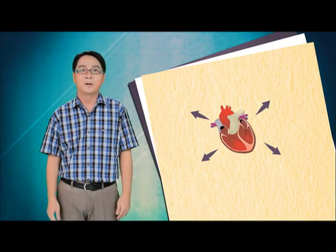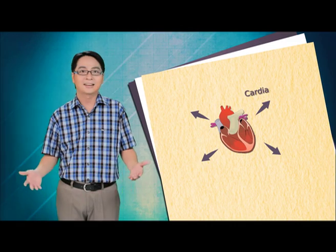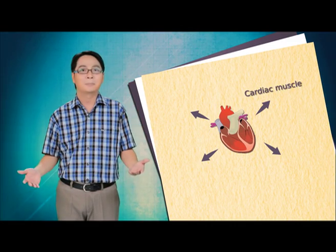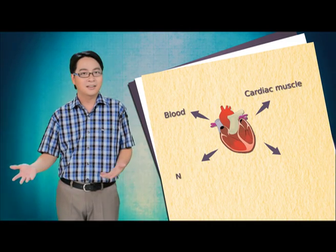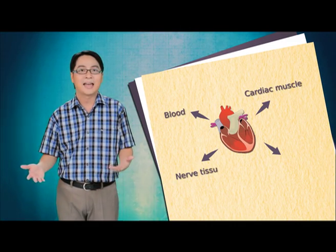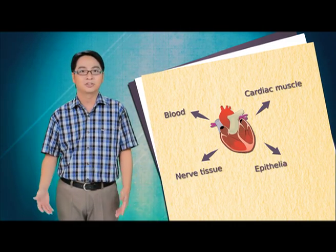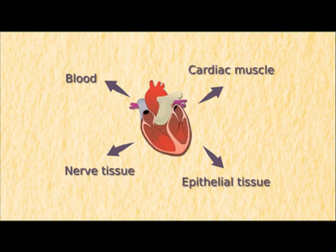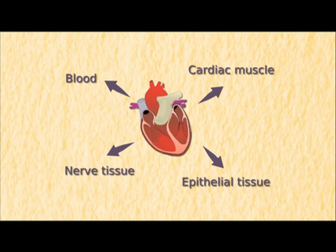When different types of tissue group and work together, they form an organ. The heart, for example, is an organ which is composed of the cardiac muscle, blood, nerve tissue and epithelial tissue. They work together to pump blood to all parts of the body.